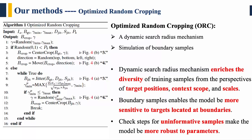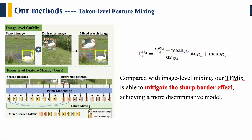Moreover, due to the check steps for uninformative samples, the model is more robust to parameters. As for our token-level feature mixing method, compared to synthesizing hard samples with background interference, we transfer distractor tokens which belong to another object to search regions, as shown in the equation. The distractor tokens are normalized before transferring to alleviate huge discrepancy. Compared with image-level mixing, our TF mix is able to mitigate the sharp-border effect, achieving a more discriminative model.